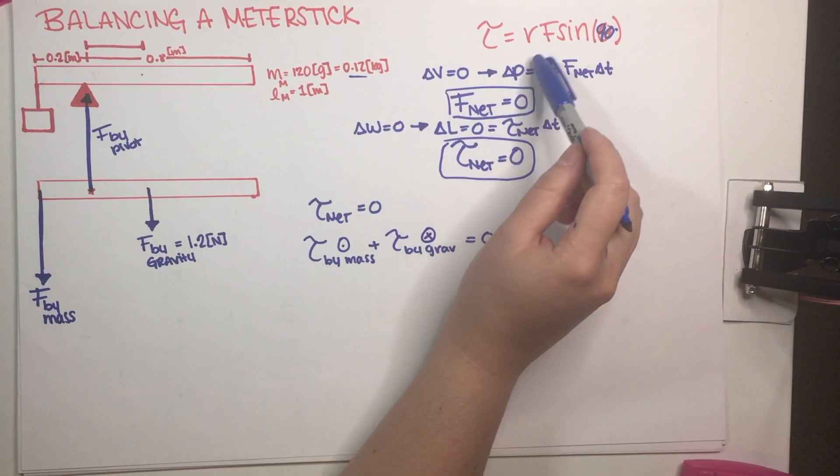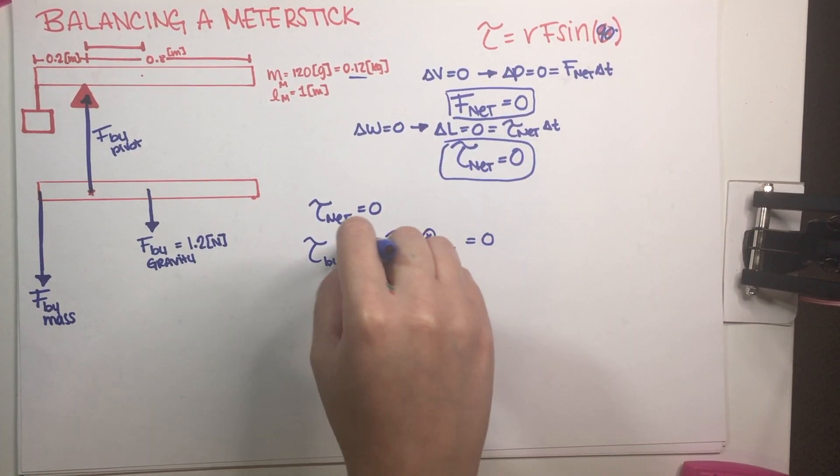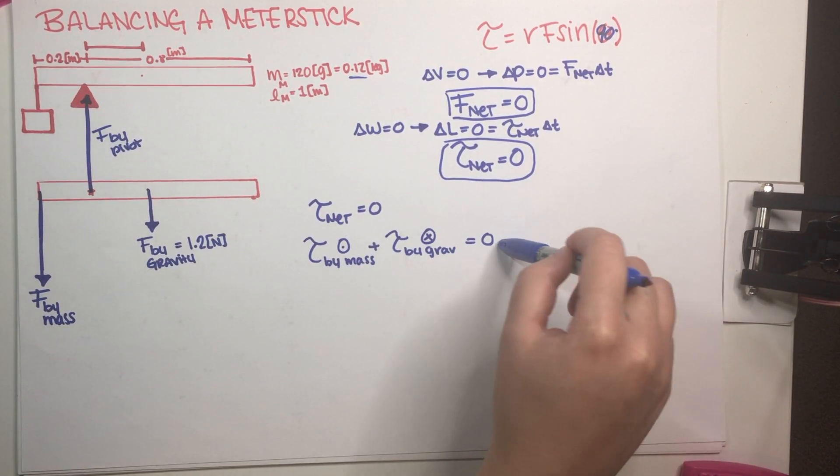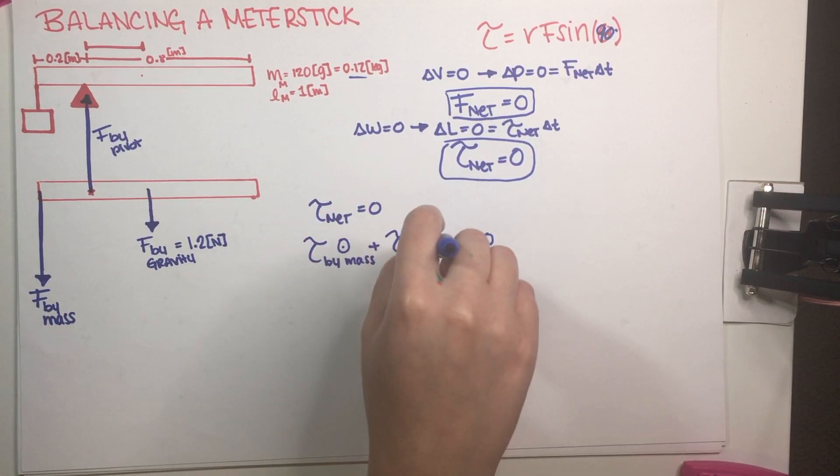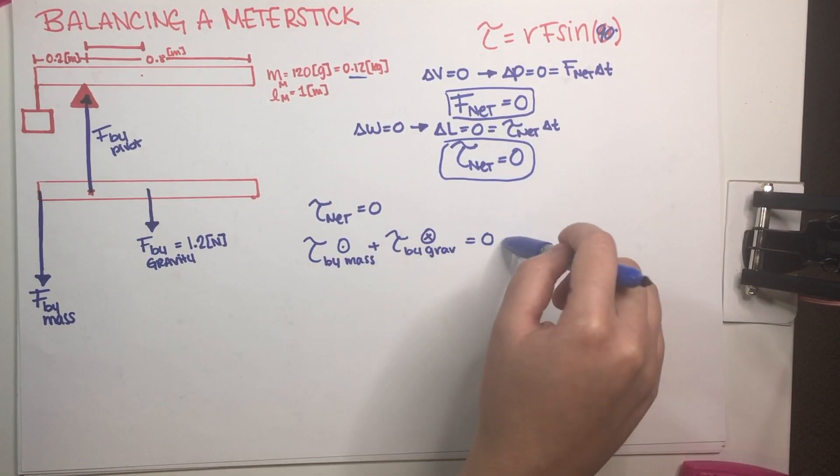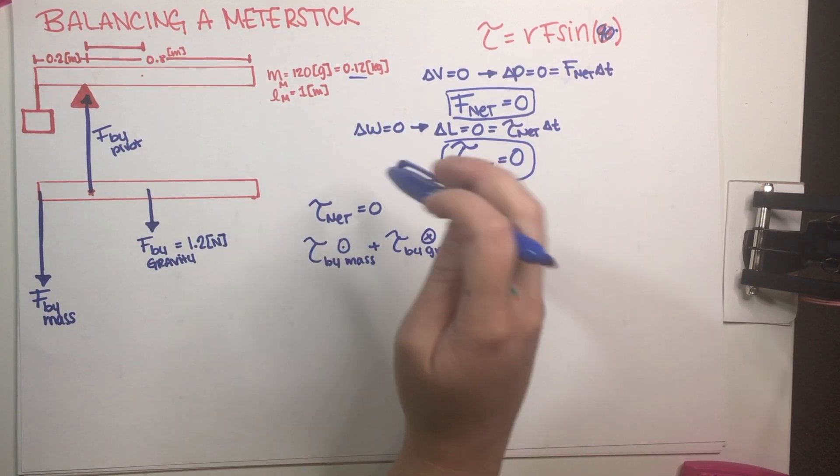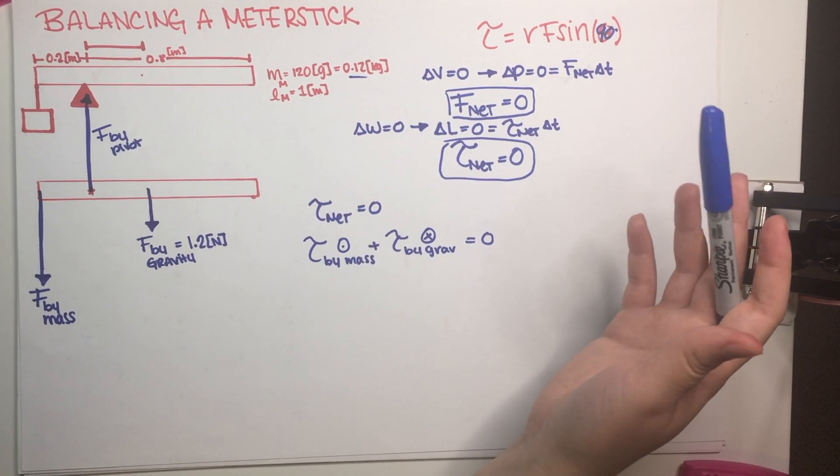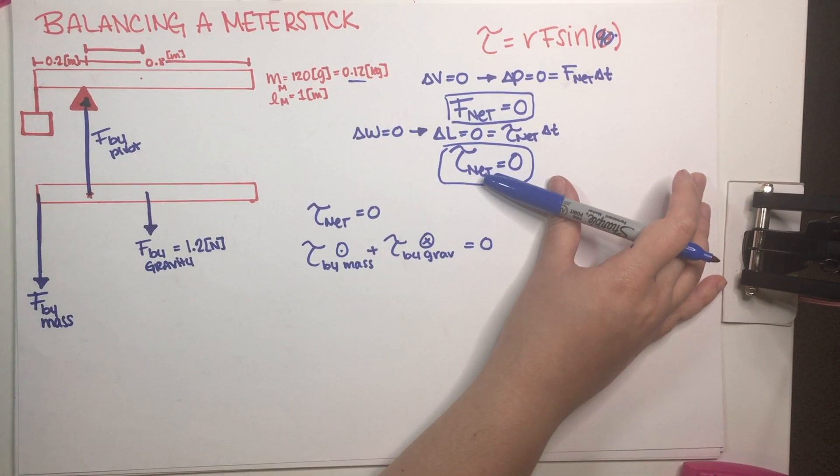This means that whenever I'm rewriting these two in terms of RF sine, I need to say that one of them is positive and one of them is negative so that they can indeed cancel out. Because if both of them were positive or both of them were negative, they wouldn't cancel out, which is how I knew right away without even using my right-hand rule that they just had to be going in opposite directions. Otherwise, it just doesn't make sense.